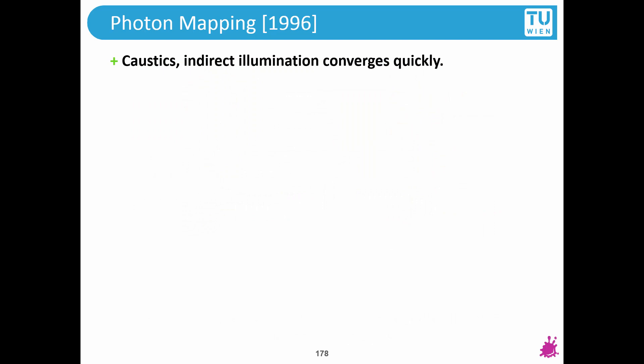What are the upsides of photon mapping? Well, caustics, indirect illumination, they converge really quickly. Caustics, why? Because you have a lot of samples because you see it from the light source. Indirect illumination, why? Because it's mostly a low frequency signal that you can interpolate very easily. Note that it also helps with the SDS problem because of the interpolation. You don't really get high frequency noise for most cases.